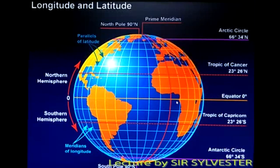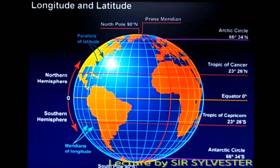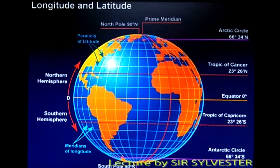The most important latitude is the equator at zero degrees. This divides the Earth into two hemispheres: the northern hemisphere and the southern hemisphere. In the northern hemisphere, we have an important latitude called the Tropic of Cancer, and in the southern hemisphere, we have the Tropic of Capricorn.